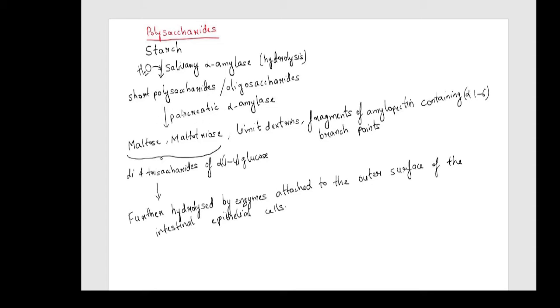The pancreatic alpha-amylase then converts these polysaccharides or oligosaccharides into disaccharides and trisaccharides like maltose and maltotriose. Limit dextrins, fragments of amylopectin containing alpha-1,6 branch points are also given out.